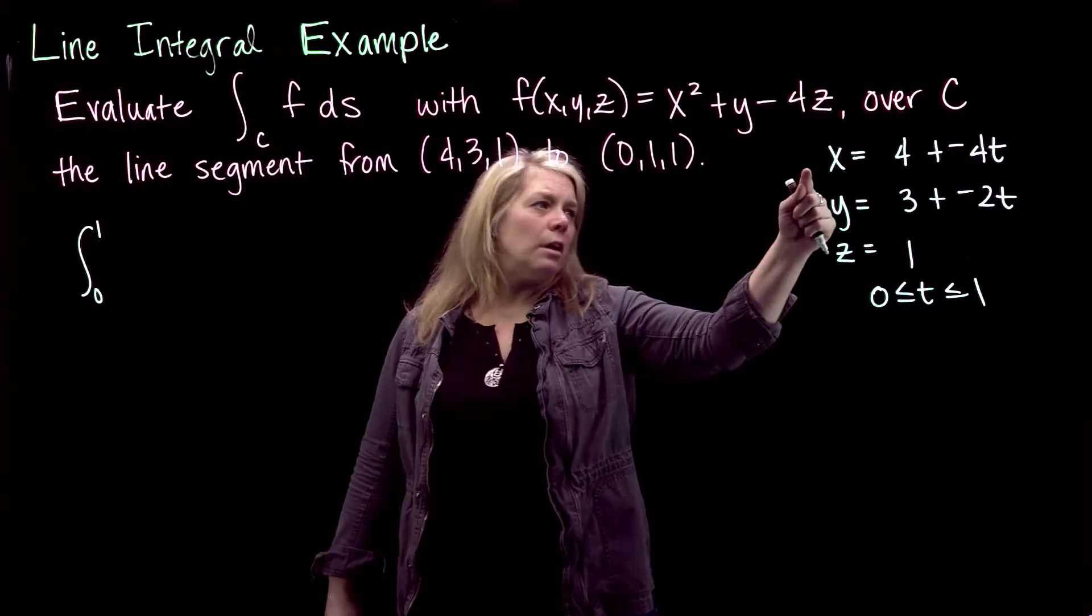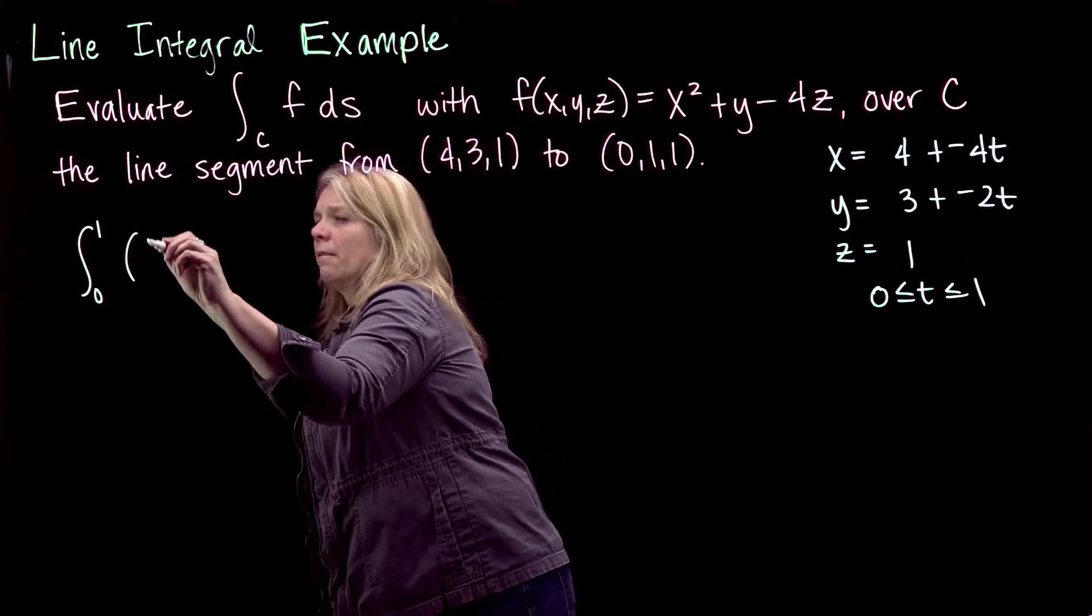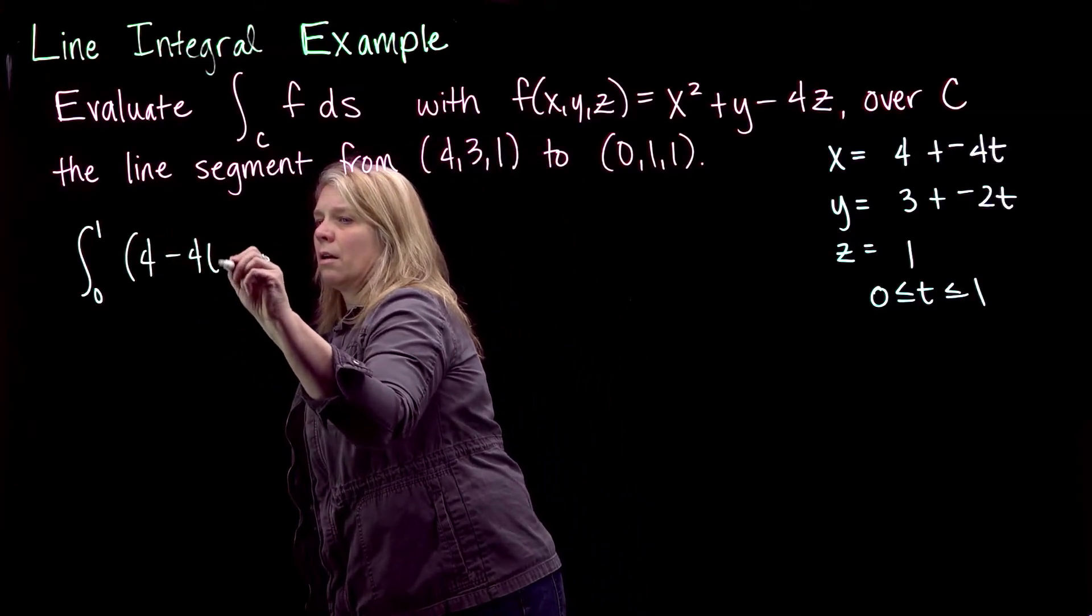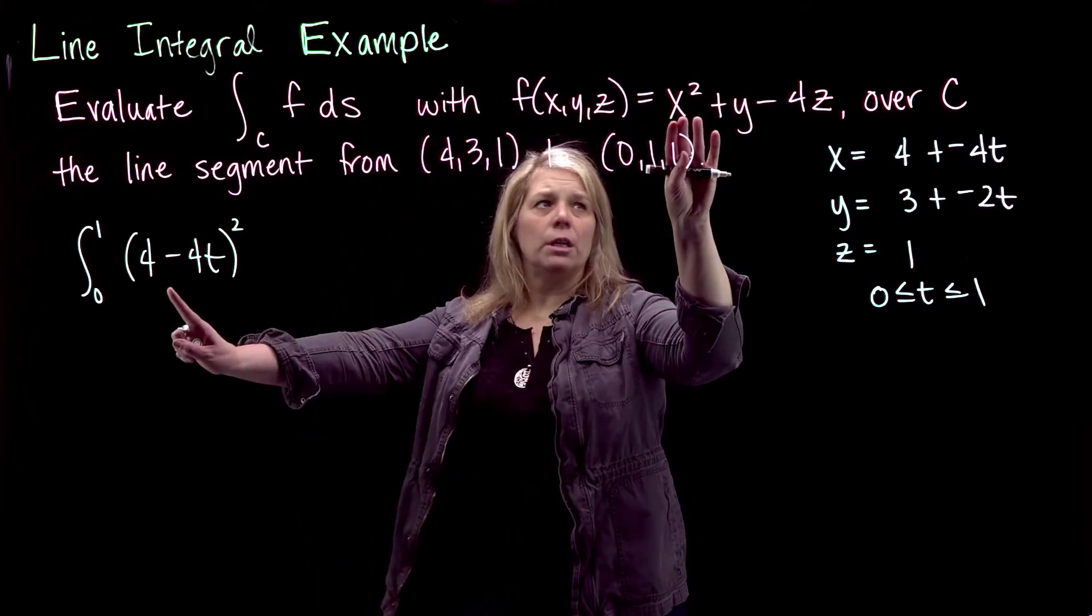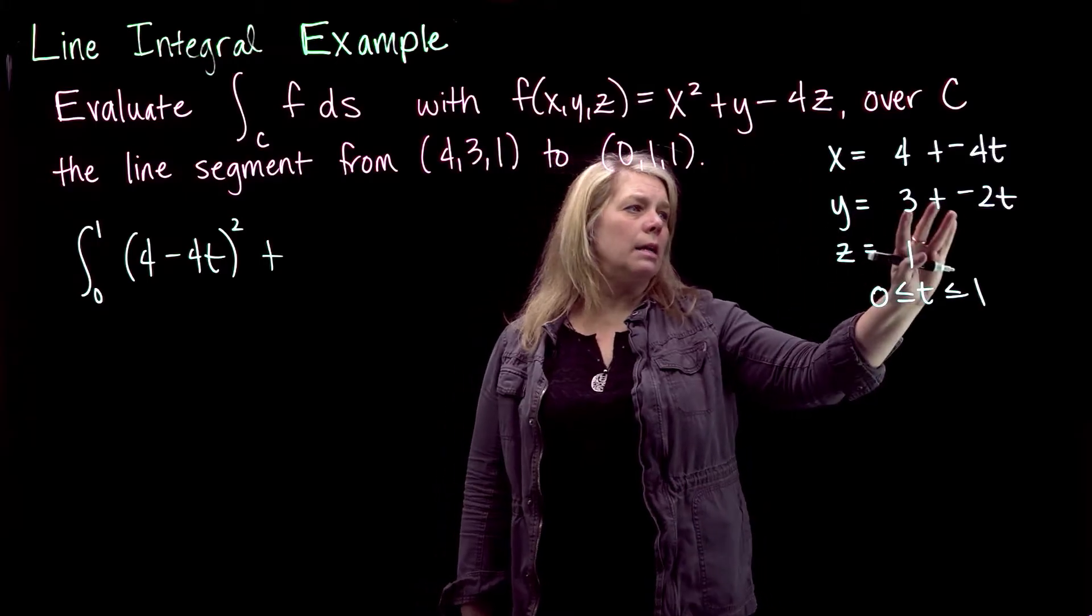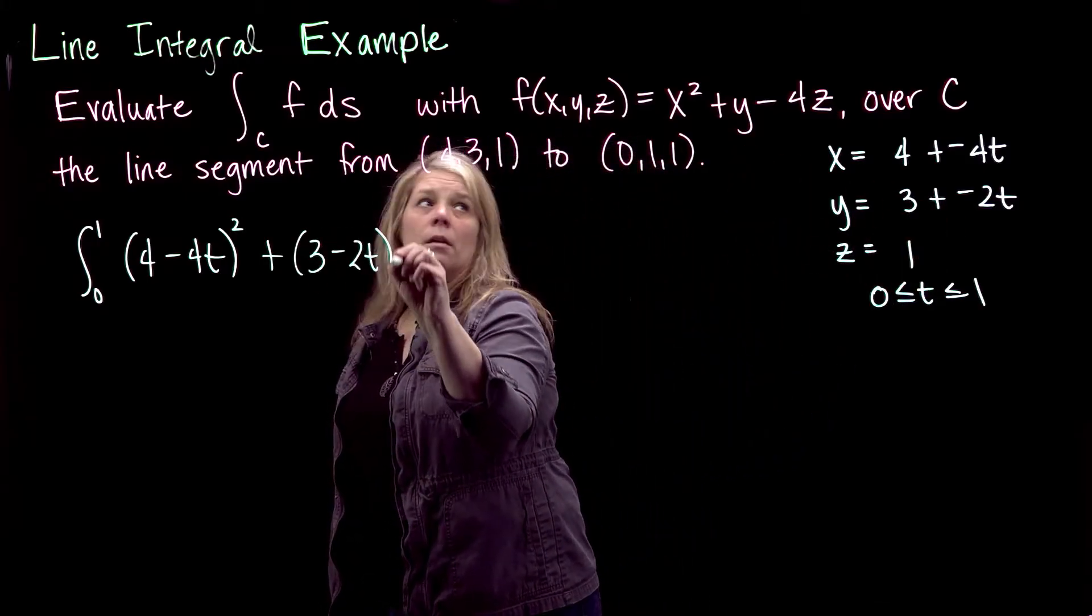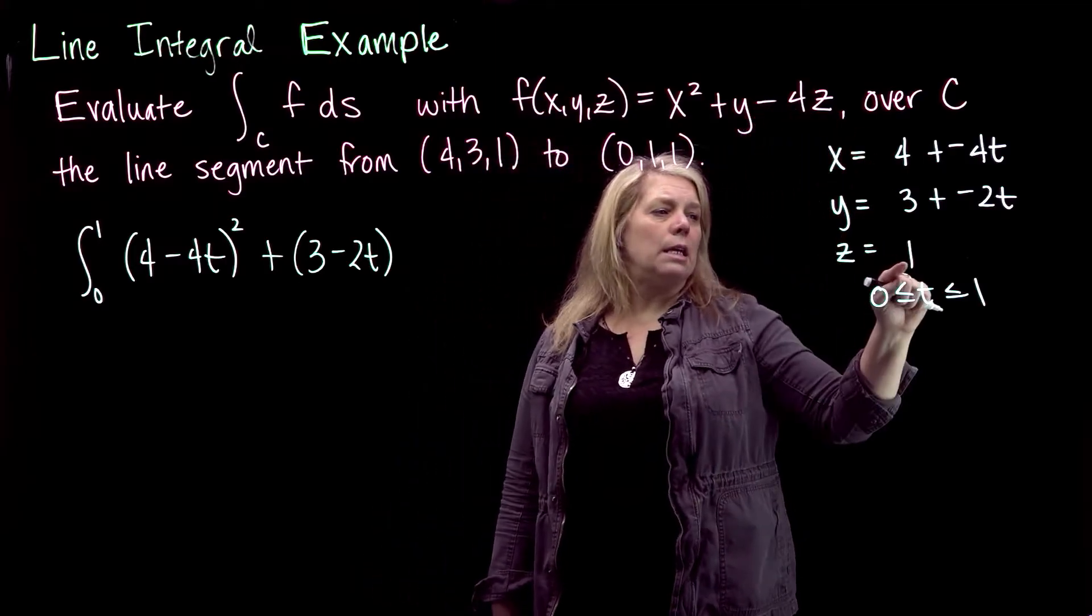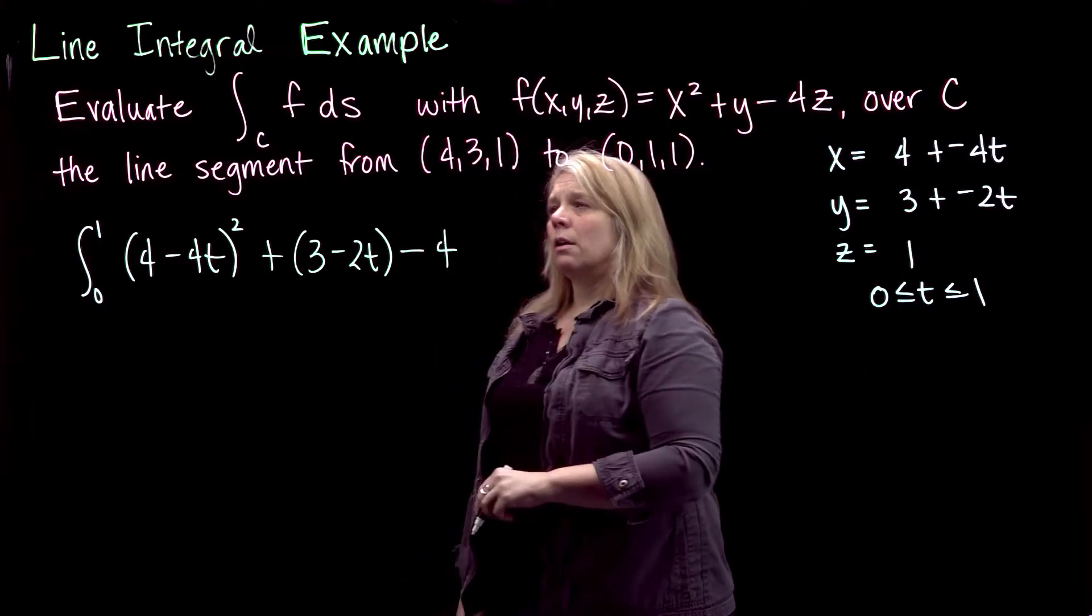So f along this curve, the x's will be given by this. That's from my x² in my function. And then plus y, my y is 3 - 2t. And then minus 4z, and my z is 1, so we will just have minus 4.